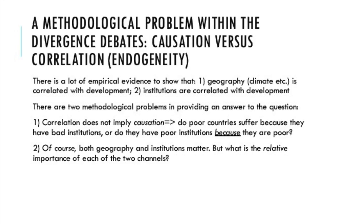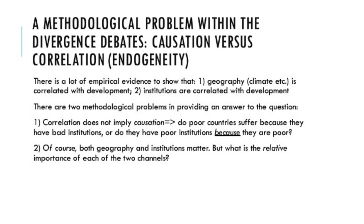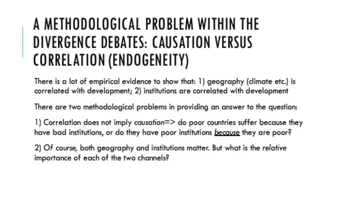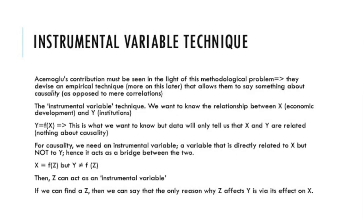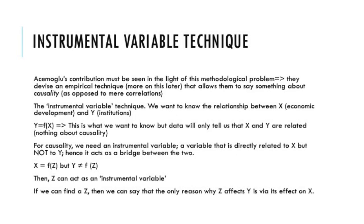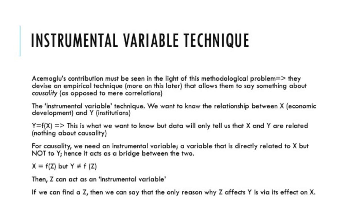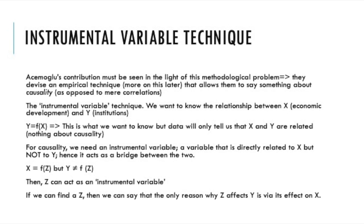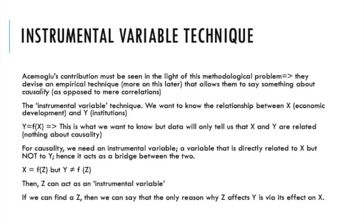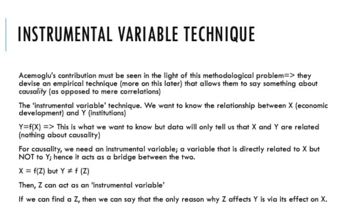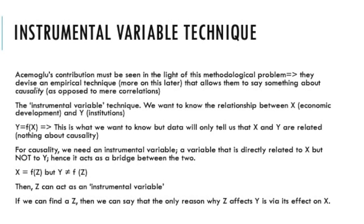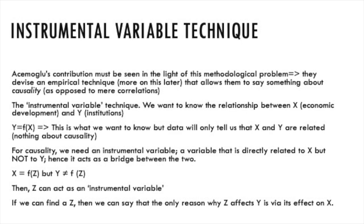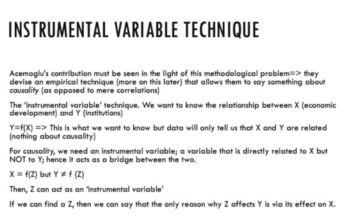How can we claim that our explanatory variable X — institutions in Acemoglu's case — causally influences our outcome variable Y, GDP per capita today? Acemoglu tries to solve this problem using a well-known technique in econometrics known as the instrumental variable, or the IV technique. The IV technique involves a simple little trick. We wanted to find a link between X and Y, but in the presence of endogeneity, we cannot be certain which way the causality runs. So imagine a hypothetical variable Z with a unique property: while it strongly correlates with our explanatory variable X, there is no theoretical reason to believe that it is directly linked to Y other than its link via X.